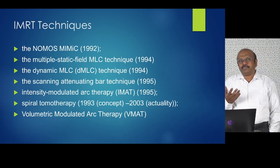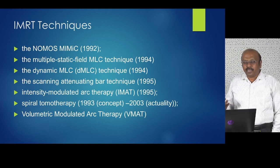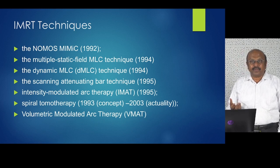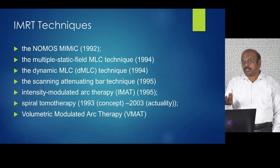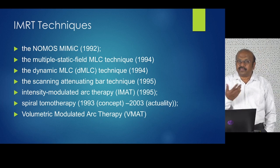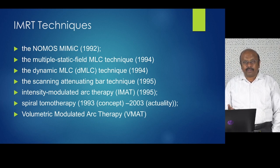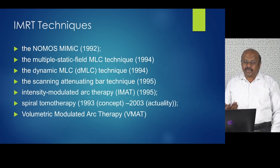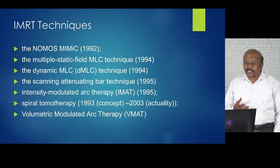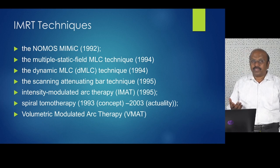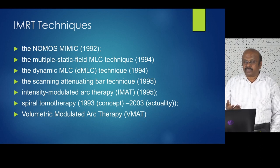The IMRT techniques evolved from 1992 by different methods. Initially they used what they call NOMOS MIMIC in 1992, then multiple static field MLC techniques starting in 1994. Dynamic MLC came and changed the method of delivery, and most Varian machines are dynamic. A scanning attenuation bar technique came in 1995, and intensity modulated arc therapy also in 1995. Spiral tomotherapy concept came in 1993 but commercially came up around 2003.